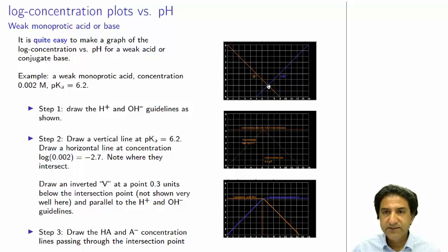Very easy. These lines have slope negative 1 and positive 1, respectively, which means to say that you go across 1 unit and up 1 unit for the OH line, and you go across 1 unit and down 1 unit to draw the H plus line here, slope minus 1. Step 2, and these are used as guidelines. These are the guidelines that we're going to use.